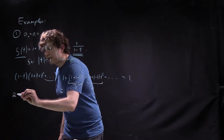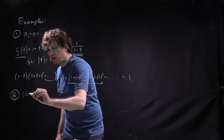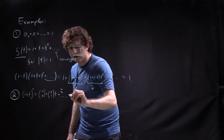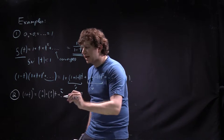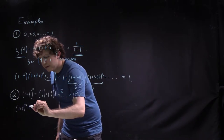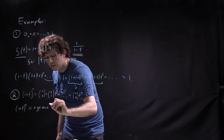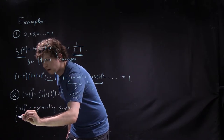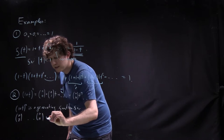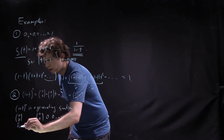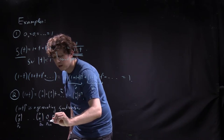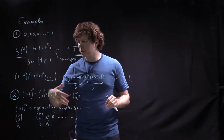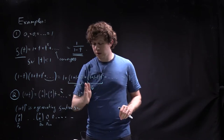Another example: (1+t)^n equals the sum C(n,0) + C(n,1)·t + ... + C(n,n)·t^n. So (1+t)^n is a generating function for the sequence C(n,0), C(n,1), ..., C(n,n), 0, 0, 0, ... — that is, a_k = 0 for k > n. One can think of it as a formal expression or as a function convergent for arbitrary t, since it's a finite polynomial.